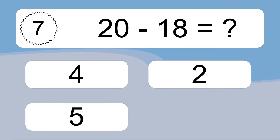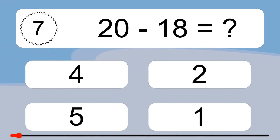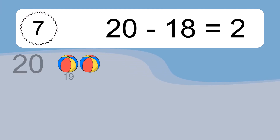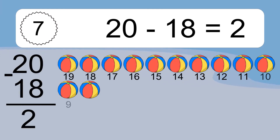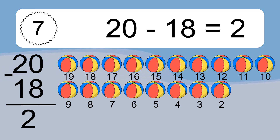20 minus 4 equals 16. Let's count it: 19, 18, 17, 16, 15, 14, 13, 12, 11, 10, 9, 8, 7, 6, 5, 4, 3, 2.